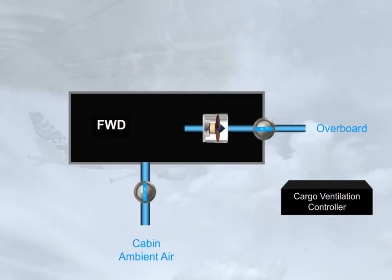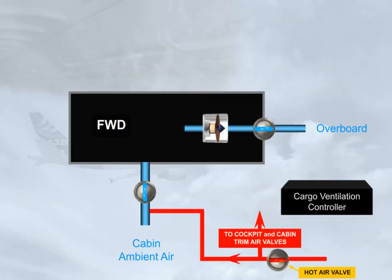For the forward cargo heating system, if installed, hot bleed air from the cockpit and cabin hot air duct is supplied via a trim air valve. The operation of the cargo trim air system is very similar to the trim air system of the air conditioning system.